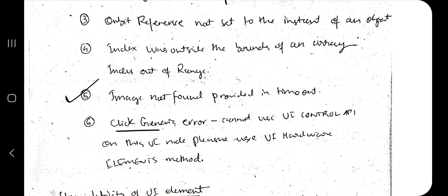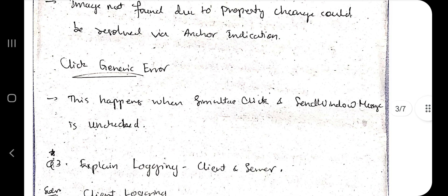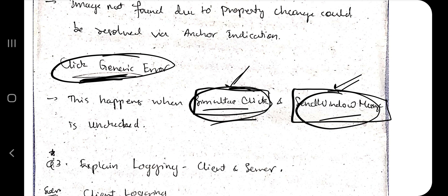Next is click generic error. In this there are some notes. This happens when the simulate click and send window message are checked. When you encounter this type of error, go to the properties tab and see if these two buttons are checked. If they are checked, what you have to do is uncheck it. When you uncheck it, this error will go.